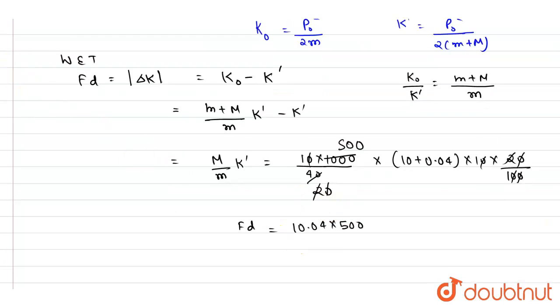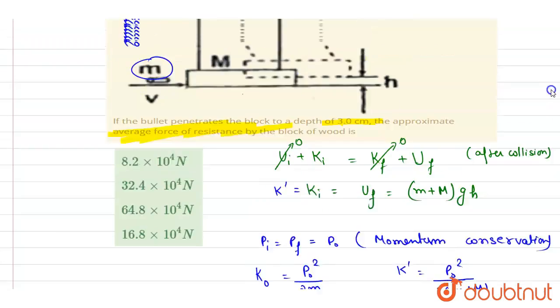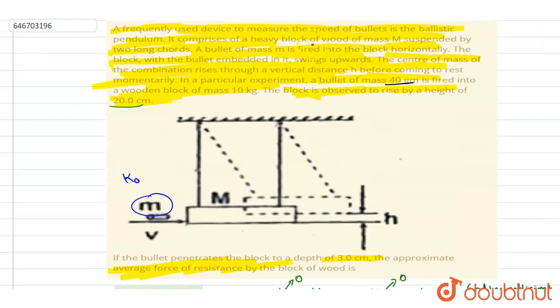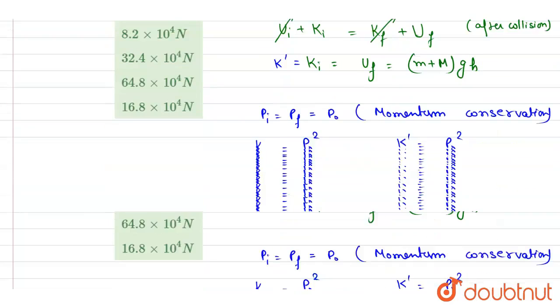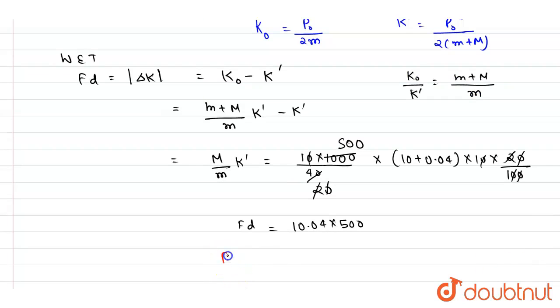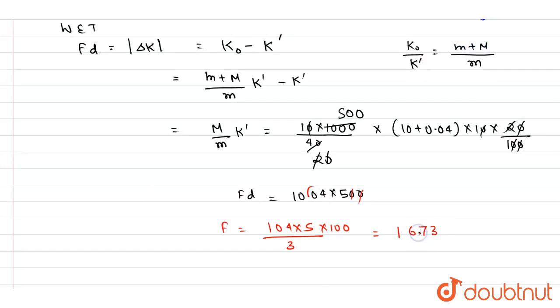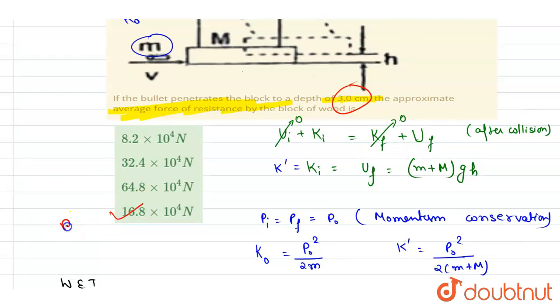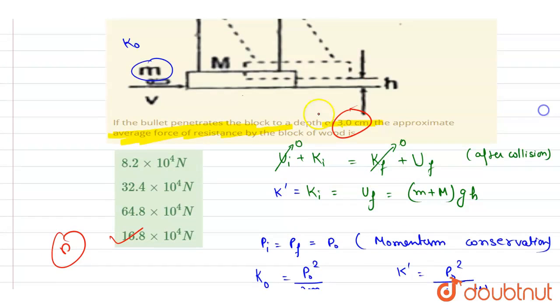Now you can just divide it with the distance through which it moves. It is given that it penetrates up to 3 cm. F equals - you can just remove by removing these two zeros, so it is by 5, and here it is 3 into this. You can just divide it with 3, so it will be equals to 6.7 into 10 to the power 4 Newton. Now you can just check for the option, so it will be D, 16.8 into 10 to the power 4 Newton. Thank you.